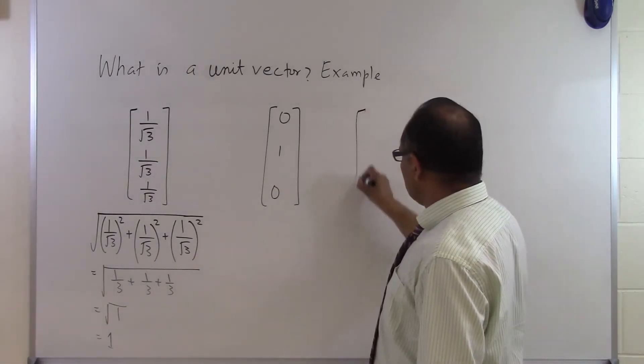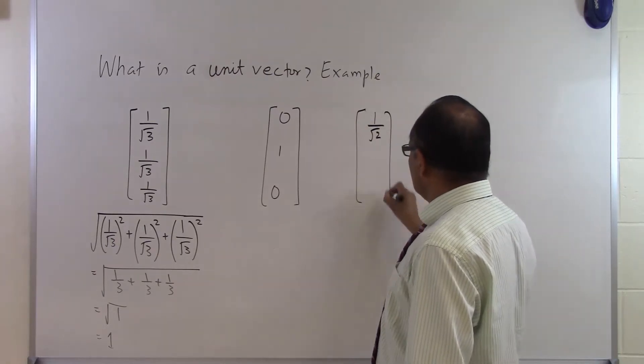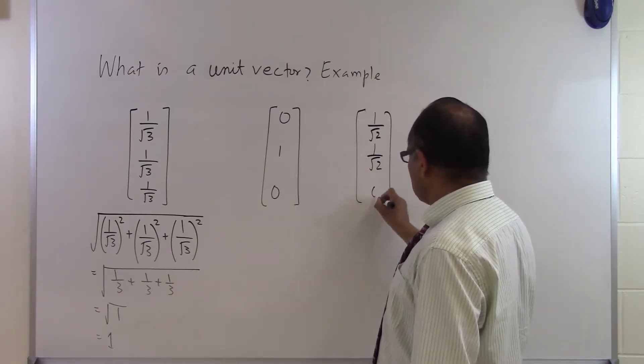Another one can be 1 divided by square root of 2, 1 divided by square root of 2, and 0.